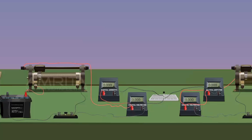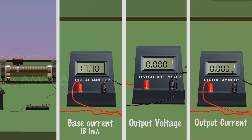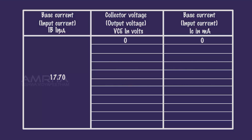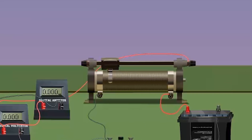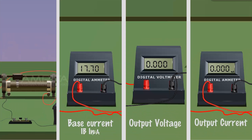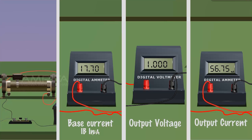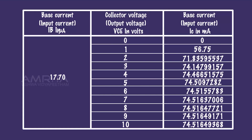Adjust the rheostat RH1 and increase the base current to another constant value. Note the collector voltage VCE and collector current IC. Record the values in the tabular column. By keeping the base current constant, the collector voltage VCE is increased by adjusting the rheostat RH2. Note the collector voltage VCE and collector current IC. Record the values in the tabular column. Increase the collector voltage VCE by adjusting the rheostat RH2. Note the collector voltage VCE and collector current IC and record the values.